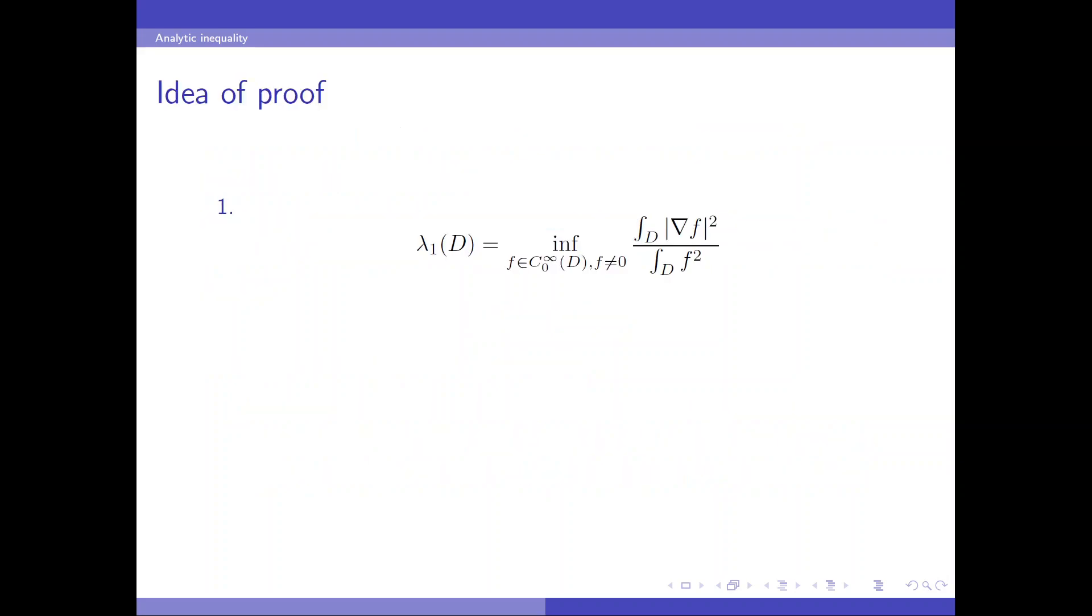Therefore the eigenvalue lambda 1 is usually called the fundamental tone of the membrane. Let's see the idea of proof. First, we have to know that the smallest eigenvalue can be characterized by the Rayleigh quotient. It is the infimum taken among all functions with compact support of the quotient of the L2 norm of the gradient over the L2 norm. So this is similar to Sobolev inequality. But now we consider the L2 norm of the gradient instead of the L1 norm.